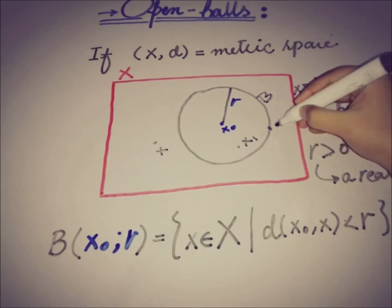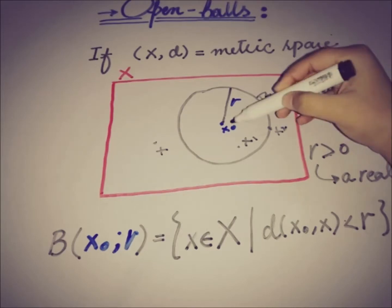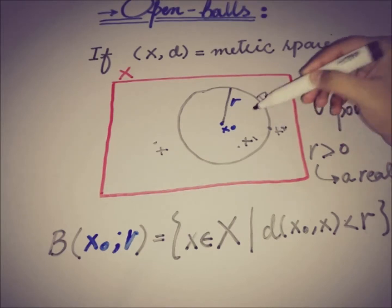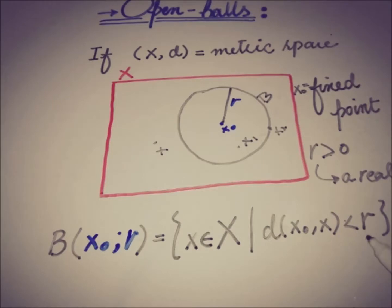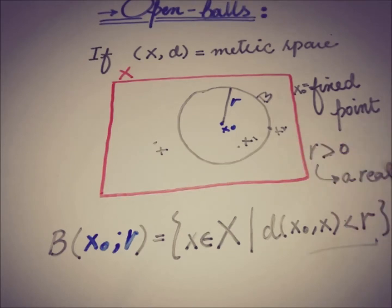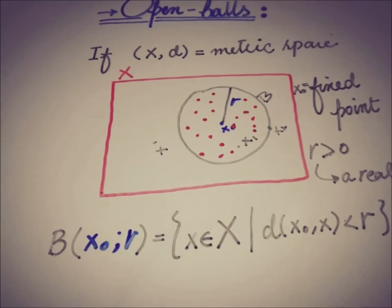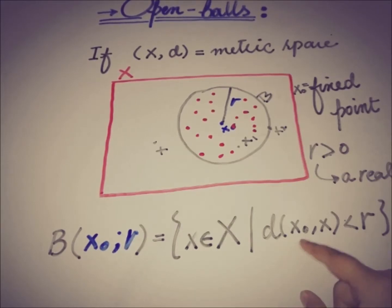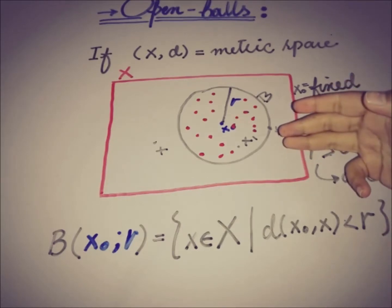Points on the boundary are not in the open ball. For example, if there is a point X₂ on the boundary, the distance between X naught and X₂ is exactly R. By definition, the distance must be strictly smaller than R, so X₂ is not part of the open ball B. All points in X satisfying d(X, X naught) < R belong to the open ball; otherwise they do not.